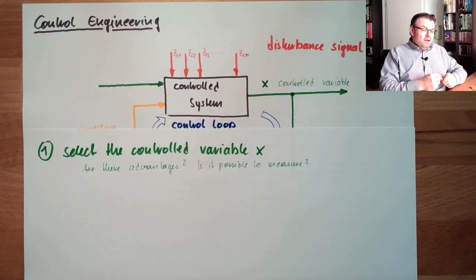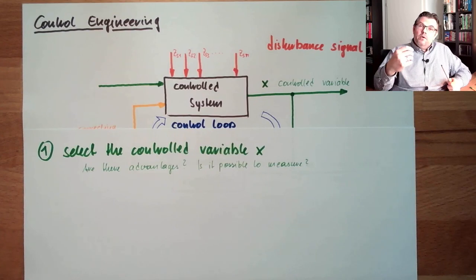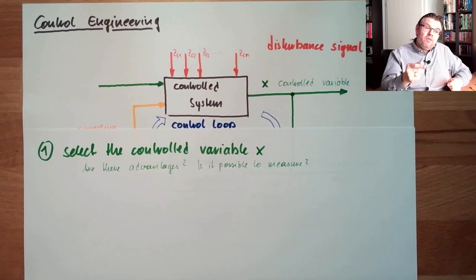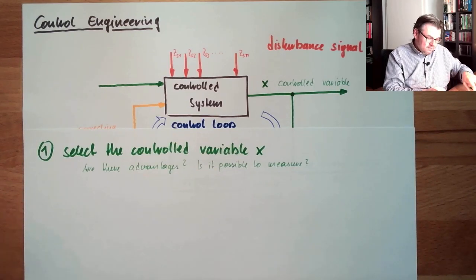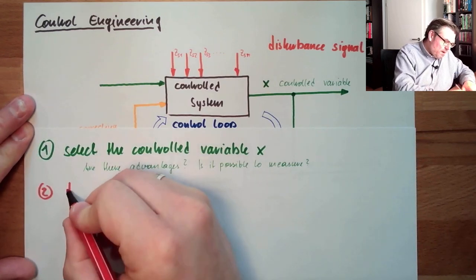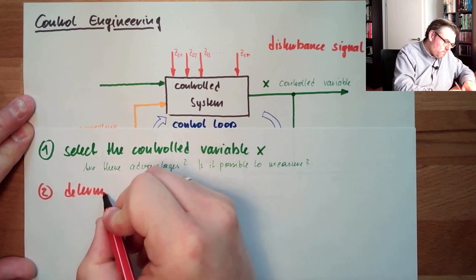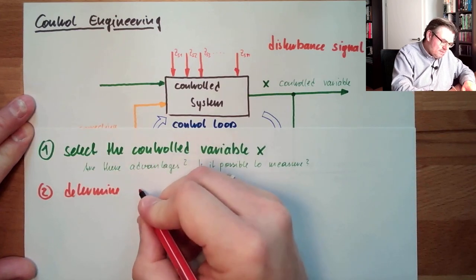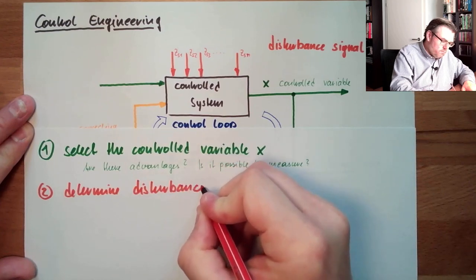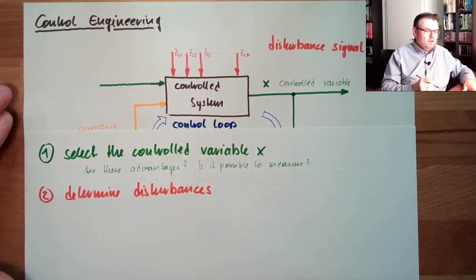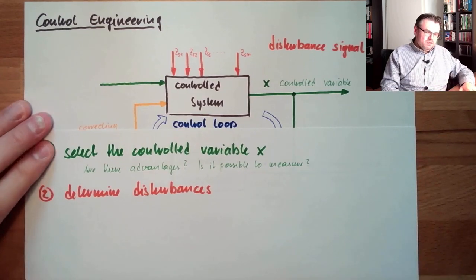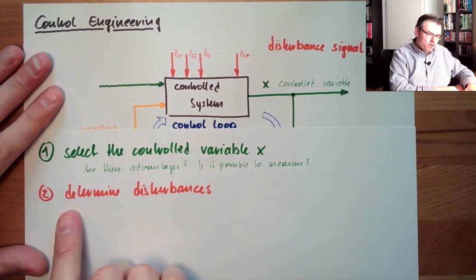Now that I know which variable I want to influence, I want to control, I can think about things which might disturb this controlled variable. Second: determine disturbances. What are the disturbances which might influence my controlled variable? This I want to know.